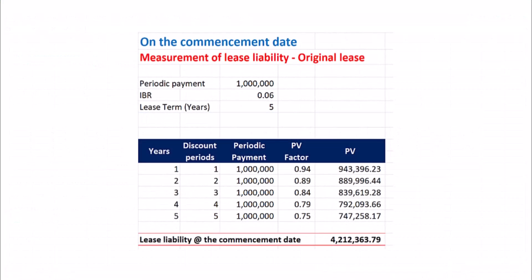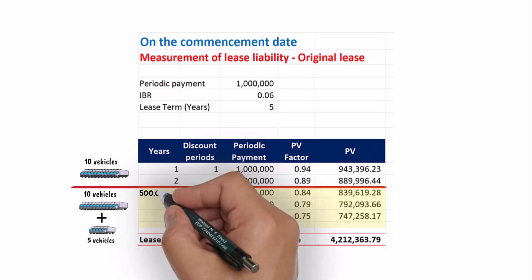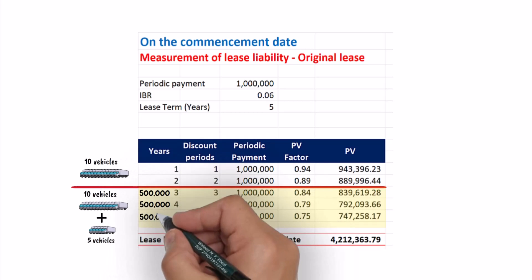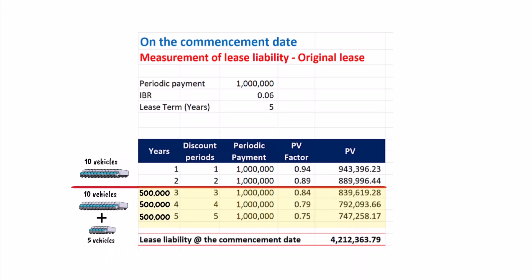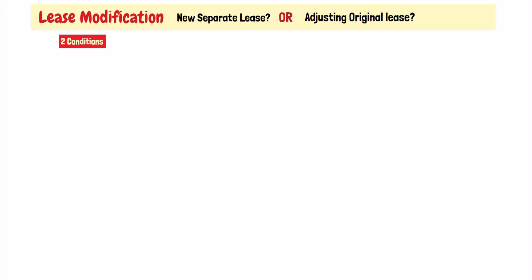Now let us account for the lease modification. At the beginning of the third year, both the lessee and the lessor agreed to amend the original lease by adding 5 more vehicles. The lease payment for these additional vehicles is 500,000 to be paid annually over the remaining 3 years. Let us check the two conditions to see whether we should account for these additional 5 vehicles as a separate lease or by adjusting the original lease.